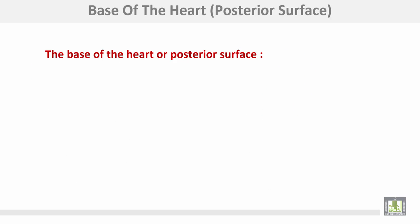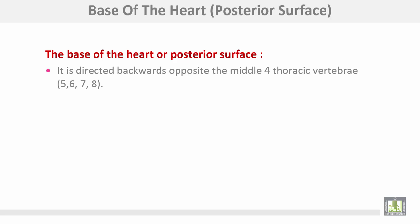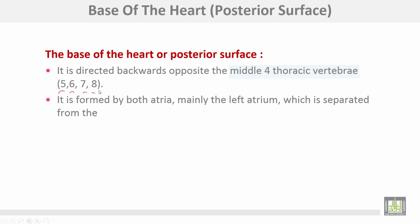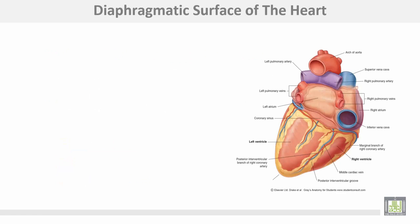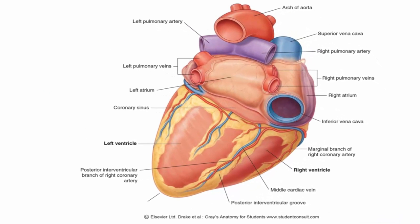The base or posterior surface of the heart is directed backwards over the middle four thoracic vertebrae — numbers five, six, seven, and eight. It is formed by both atria, mainly the left atrium, which is separated from the vertebral column by the pericardium, esophagus, and descending aorta. This is the diaphragmatic surface of the heart, and this is the base of the heart or posterior surface.